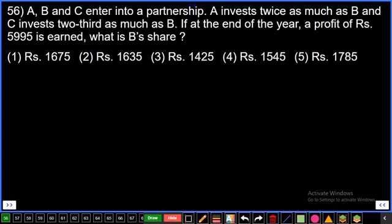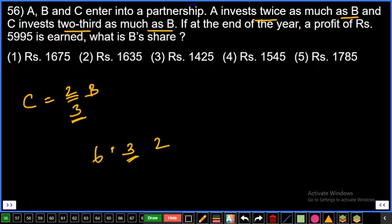SBA apprentice paper explanation, numerical ability. Question number 56: A, B and C enter into a partnership. A invests twice as much as B, and C invests two-third as much as B. If at the end of the year, a profit of rupees 5995 is earned, what is B's share? C invests two-third as much as B means C equals two by three of B. If B's investment is three parts, then C's investment is two parts. A invests twice as much as B, so if B is three, then A is six parts. A, B, C investments are in the ratio 6:3:2.